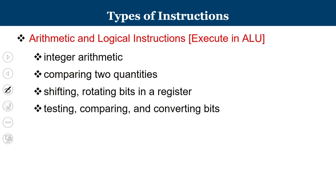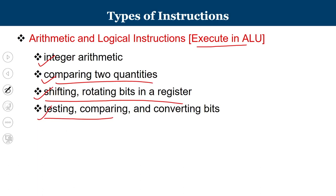Arithmetic and logic instructions are typically executed in the arithmetic logic unit. For example, integer arithmetic operations, logical operations like comparison of two quantities, shifting and rotating bits inside a register, testing and comparing — all are examples. Anything related to integer arithmetic like add, subtract, multiply, logical operations like AND, OR, comparison, shifting, rotating — these belong to tasks carried out inside the ALU. The operands come into the ALU, the ALU performs the task, and the result is generated.